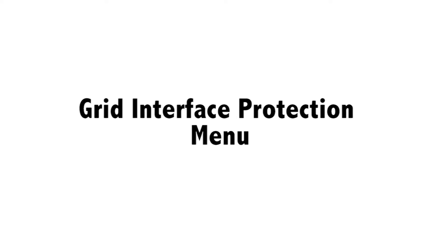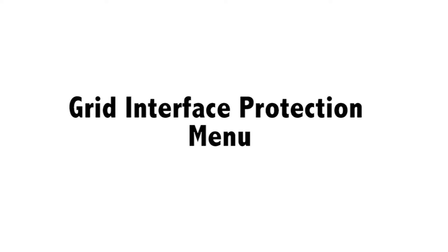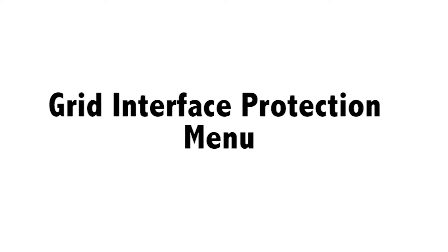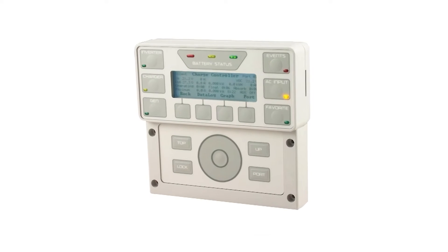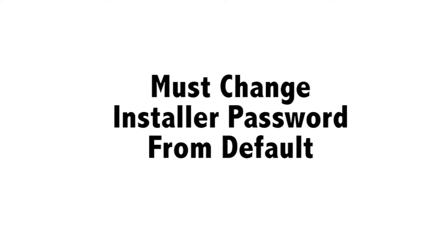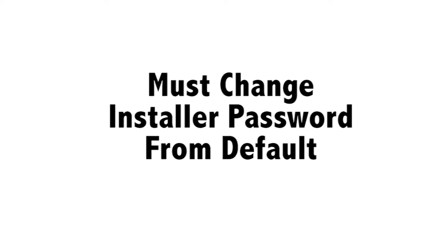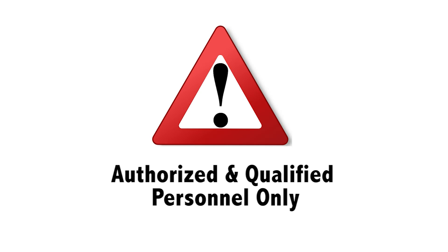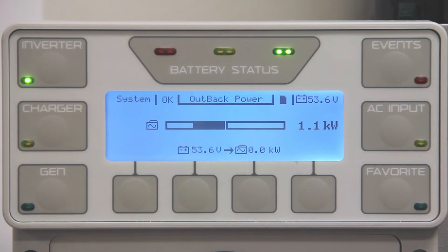In this tutorial, we will show you how to access the grid interface protection menu from a Mate 3. To access the advanced grid interface protection settings, one must first change the installer password different from default. Note, the grid interface protection settings should only be altered by authorized and qualified personnel.